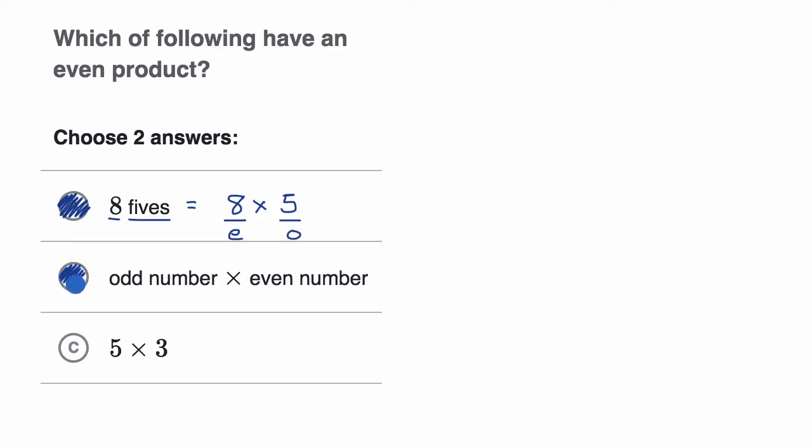And then five times three, you have an odd times an odd, which is going to give you an odd number. Even if you didn't know that this is going to be 15, you would know that an odd times an odd is always going to give you an odd product, not an even product. So we would pick these first two.